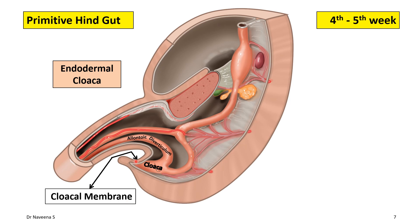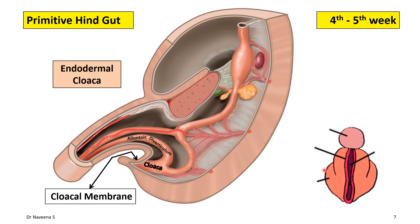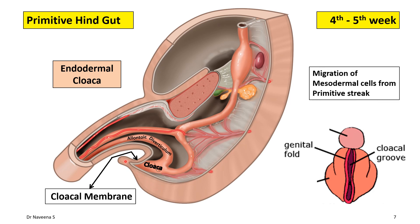The cloacal membrane at this stage shows some changes. In the ventral view of the cloacal membrane, it initially shows a central longitudinal depression known as the cloacal groove, which has raised margins called genital folds. During this stage, mesodermal cells from the primitive streak start migrating more ventrally on either side of the genital folds to form genital swellings. These migrating mesodermal cells reach the cranial portion of the cloacal groove, where they proliferate and aggregate to form a cellular mass called the genital tubercle — a mesodermal cell aggregation seen at the cranial part of the cloacal membrane.